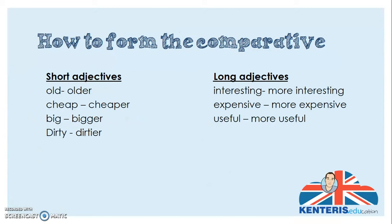Overall, for short adjectives: 'old' becomes 'older,' 'cheap' becomes 'cheaper.' 'Big' becomes 'bigger' — note we've added another G, because it follows a consonant-vowel-consonant pattern with primary stress on that syllable, so we double the consonant and add -er. 'Dirty' drops the Y and becomes 'dirtier.' For long adjectives, they're easier: 'more interesting,' 'more expensive,' and 'more useful.'